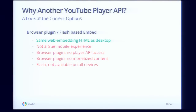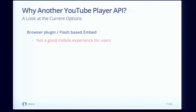So why do we want another YouTube Player API? There are three options available at the moment to embed YouTube videos in your apps, and they're not terribly satisfactory. The first two involve embedding a web view in your app. The first option is the normal Flash-based embed — the traditional web embedding format from the beginning of YouTube. Unfortunately, it's not really a true mobile experience; the buttons are not easily clickable on mobile phones, it's not optimized for touch, and of course it uses Flash. Not many devices have Flash pre-installed, and if Flash is unavailable it falls back to the browser plug-in, meaning you have no access to the Player API or monetized content.